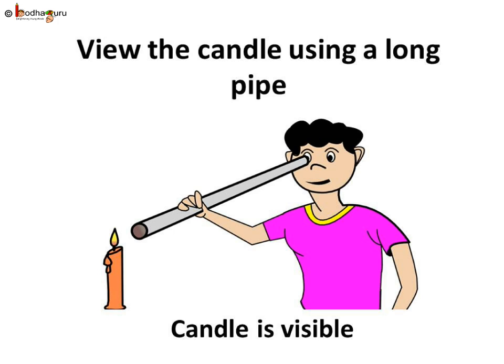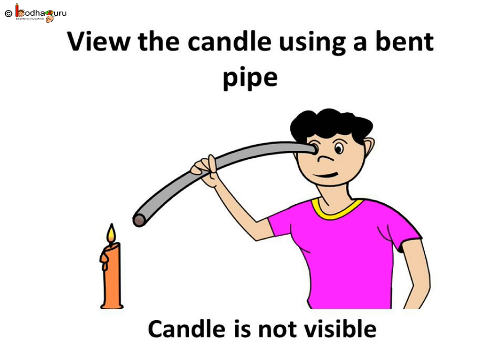Light a candle and fix it on the table at one end of the room. Take a piece of pipe or a long rubber tube. Now look at the candle through the long pipe or the rubber tube — the candle is visible. Now bend the pipe a little while you are looking at the candle. The candle is no longer visible. Try to turn the pipe a little to the right or left; still the candle won't be visible from the pipe. So what do we conclude from this? This suggests that the light travels along a straight line.